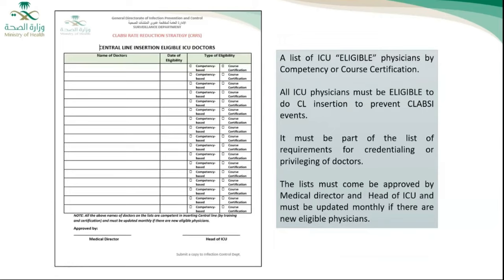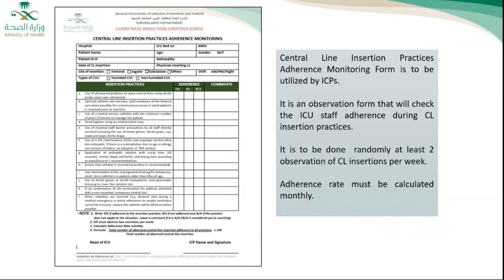The next form is the central line insertion eligible ICU doctors list. This list should be filled with ICU staff who are eligible for central line insertion through certification or competency assessment, and should be approved by the medical director or ICU head. The central line insertion practice adherence monitoring form should be utilized by the infection control practitioner to audit infection control practice during central line insertion, and should be performed at least twice per week.